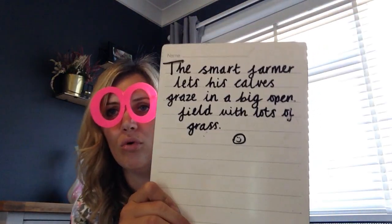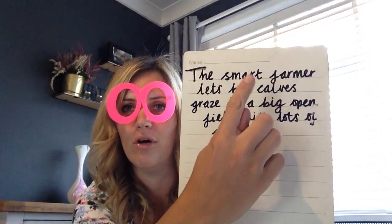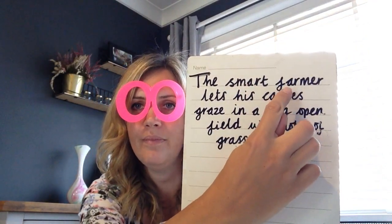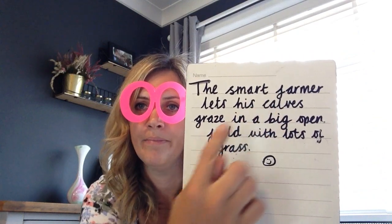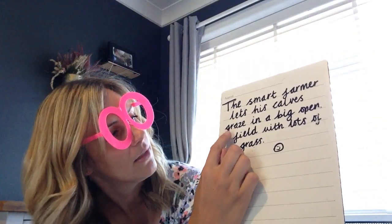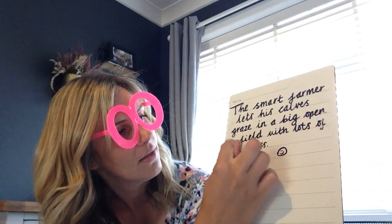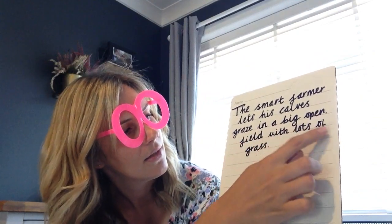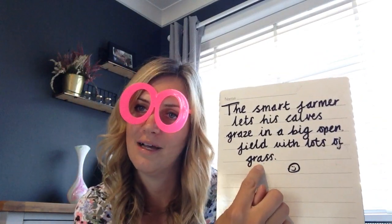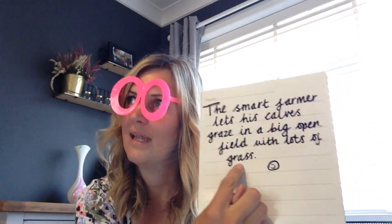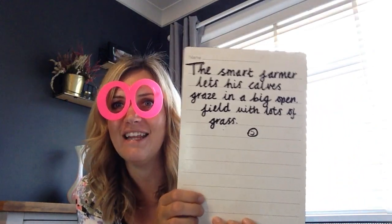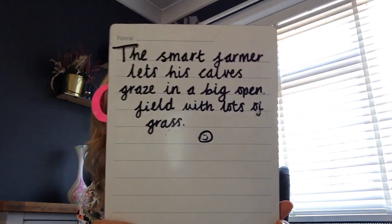Now let's have a look at the next sentence which contains more of your R sounds. So you've got R as in arm, and you've got R as in palm, and then you've got R as in father at the bottom. Now let's see if you can read this sentence — pause that and have a go.